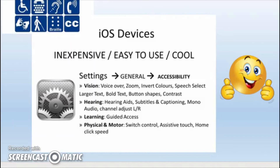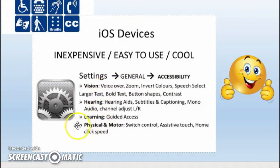One more quick thing around iOS devices and the accessibility settings. If you go to Settings under Accessibility in Apple, you can do a whole bunch of things worth turning on or off depending on your need. One in particular is Speech Select — I always have Speech Select on, and I'll show you why that matters to me shortly.